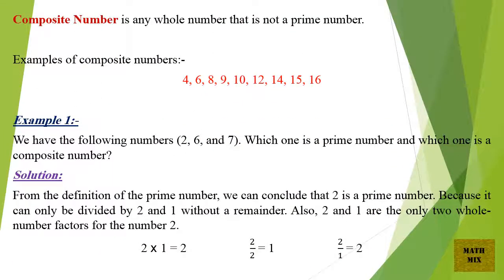A composite number is any whole number that is not a prime number. Examples of composite numbers: 4, 6, 8, 9, 10, 12, 14, 15, and 16.